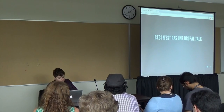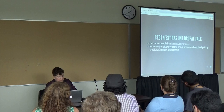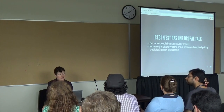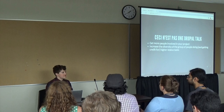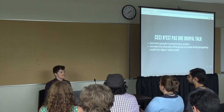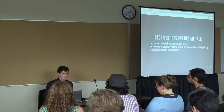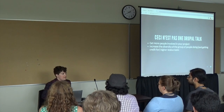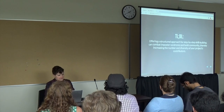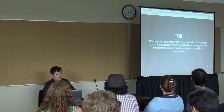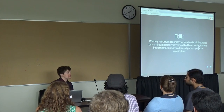I'm arguing this approach can be a secret weapon for both getting more people involved in your projects and also for increasing the diversity of the group of people who are doing and getting credit for higher-status tasks. I'm assuming people interested in the health of your projects, the health of the open source community in general, and social justice — including the status of people who have been historically underrepresented. My main point: operate a structured approach for step-by-step skill building, combat imposter syndrome, and build community, thereby increasing the number and diversity of your project's contributors.